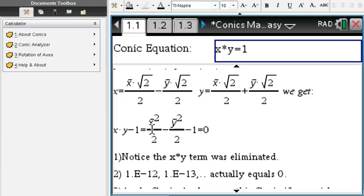And you can see that our new equation is now x²/2 - y²/2 - 1, which does not contain an xy term anymore. The xy term was eliminated. That's what the rotation of axis does.